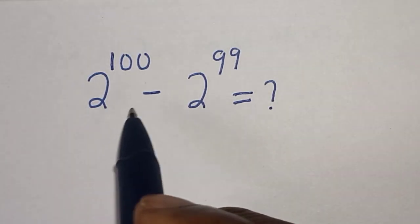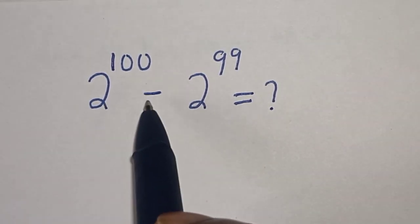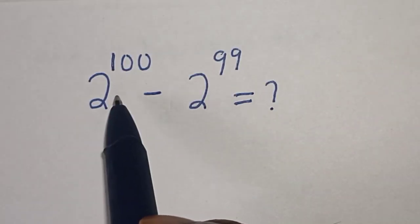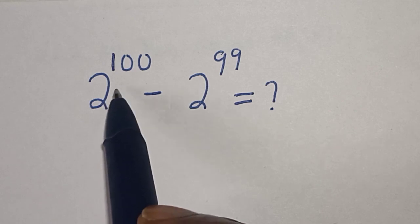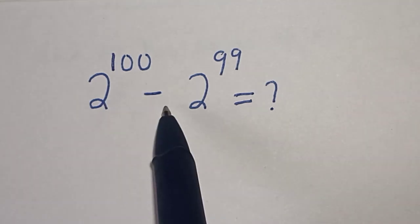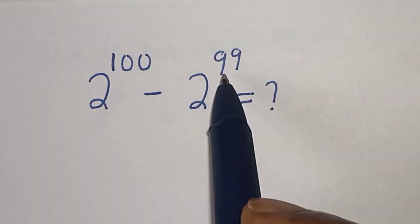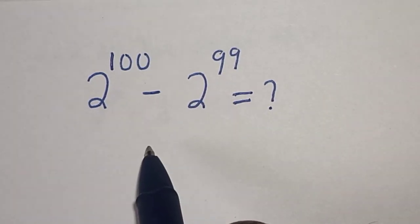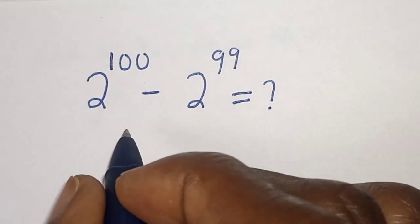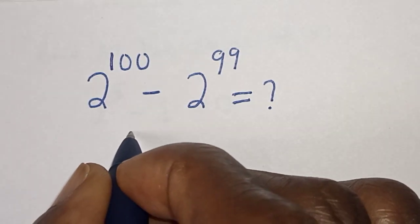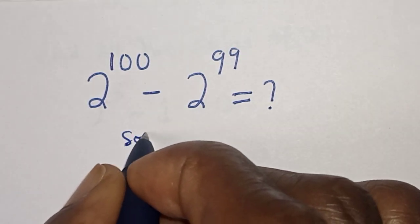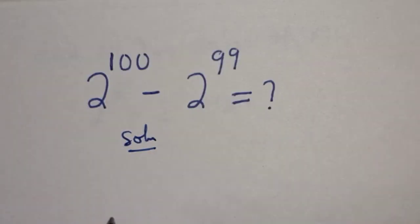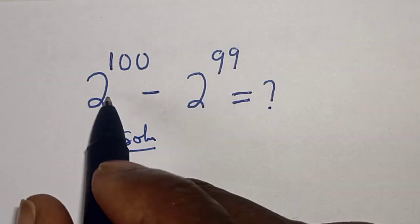Hello, welcome to Magis. In this class we quickly want to evaluate this math problem: 2 raised to power 100 minus 2 raised to power 99 is equal to what? Like, share, comment and subscribe. Solution: we have 2 raised to power 100 minus 2 raised to power 99.